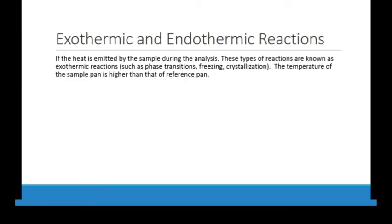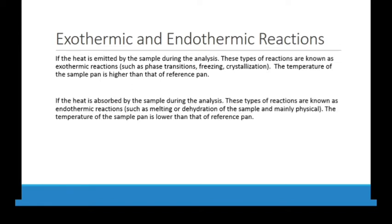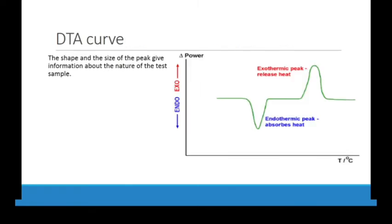If heat is emitted by the sample during analysis, these reactions are known as exothermic reactions — such as phase transition, freezing, and crystallization. The temperature of the sample pan is higher than that of the reference pan because the sample is emitting heat. If heat is absorbed by the sample during analysis, these are known as endothermic reactions — such as melting or dehydration — and the temperature of the sample pan is lower than that of the reference pan because it is absorbing heat from the surroundings and from the heater.